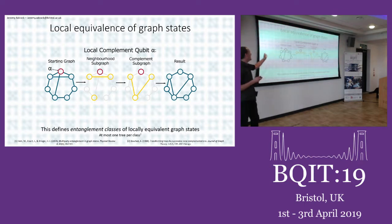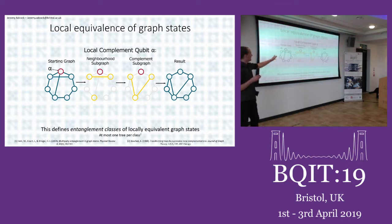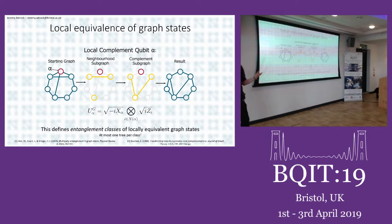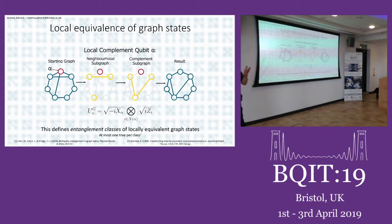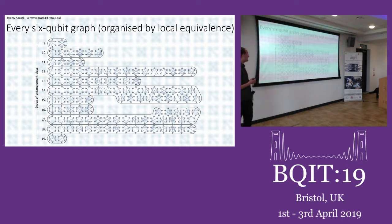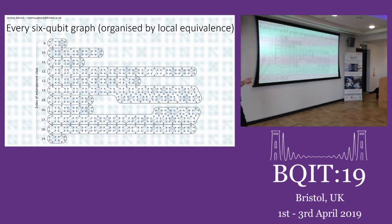To locally complement qubit A, you take that qubit's neighborhood — highlighted in yellow — the things it's connected to, and then remove edges where they're present and add them where they're not to get the result. This has a local unitary operation that corresponds to it that you can do on your quantum state. This gives us classes of locally equivalent states and defines classes of entanglement of graph states. Here are all the six-qubit graph states delineated into their 11 entanglement classes, each with different properties useful for different things.